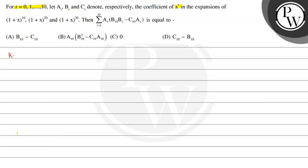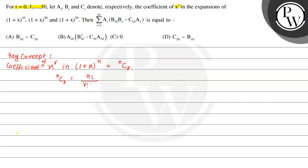The key concept to solve this question is that the coefficient of x to the power r in (1+x)^n is equal to nCr, where nCr equals n factorial divided by r factorial multiplied by (n minus r) factorial.